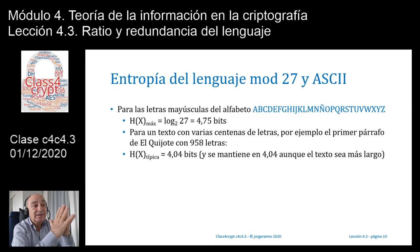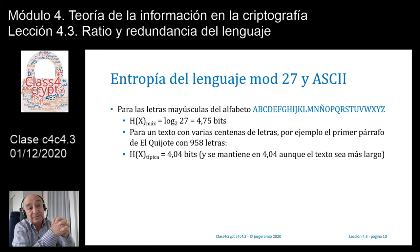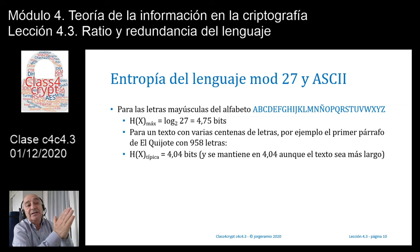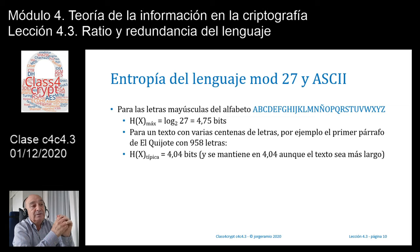Para las letras mayúsculas del alfabeto, de la A hasta la Z incluida la Ñ, con 27 elementos, la entropía máxima va a ser el logaritmo en base 2 de 27, porque cada una de esas 27 letras tiene una probabilidad de 1/27. Eso da un valor igual a 4,75 bits. Para un texto con varias centenas de letras —por ejemplo, el primer párrafo del Quijote, que tiene un total de 958 letras— la entropía típica es igual a 4,04. Y ese valor se mantiene en 4,04 si en vez de tomar solamente el primer párrafo, tomamos los cinco primeros: en vez de tener 950 letras, tenemos 5000, 8000 o 15000 letras; la entropía ya se mantiene constante, siempre muy cerca de 4,04.